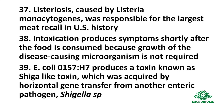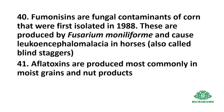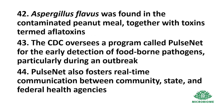Escherichia coli produces toxins known as Shiga-like toxins, which were acquired by horizontal gene transfer from another enteric pathogen, Shigella species. Fumonisins are fungal contaminants of corn, first isolated in 1988, produced by Fusarium species, and cause leukoencephalomalacia in horses, also called blind staggers. Aflatoxins are produced most commonly in moist grains and nut products by Aspergillus flavus, which was found in contaminated peanut meal.